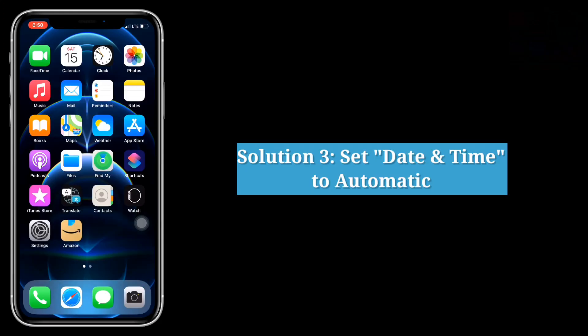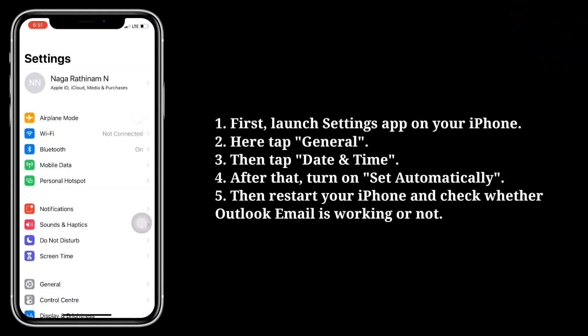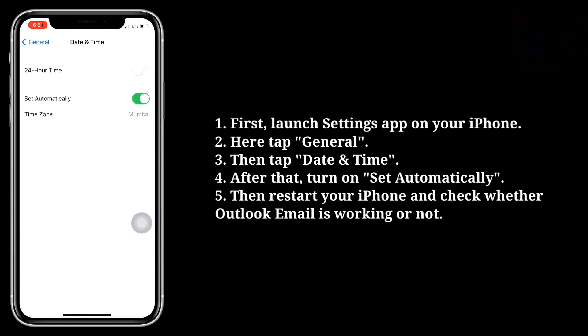Third solution is set date and time to automatic. First launch the Settings app on your iPhone. Here tap General, then tap Date and Time. After that, turn on Set Automatically. Then restart your iPhone and check whether Outlook email is working or not.